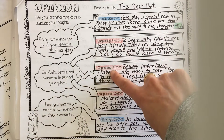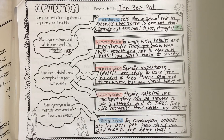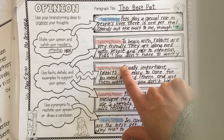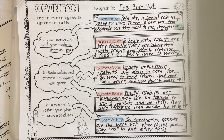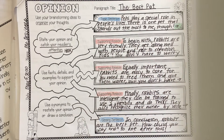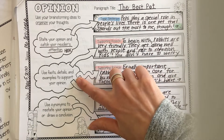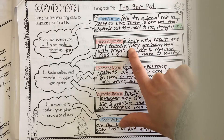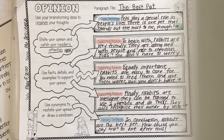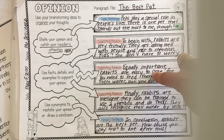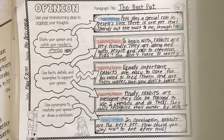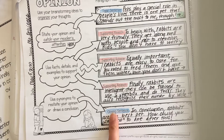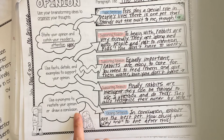The next thing you need to do, just like we talked about in my video yesterday, is use facts, details, and examples to support your opinion. Not only do I have a supporting reason, but I also give many details to make that main supporting reason stronger. I also looked up some facts online about rabbits so that I know what I'm saying is true. These are also factual reasons why I think a rabbit would be the best pet.